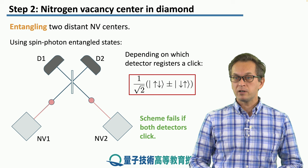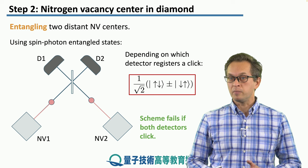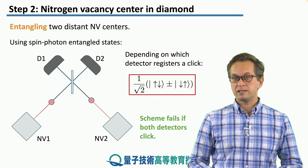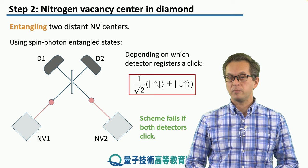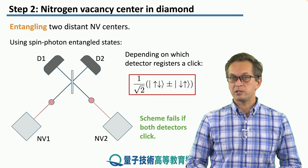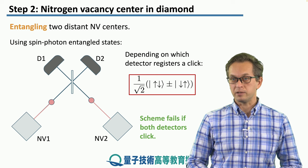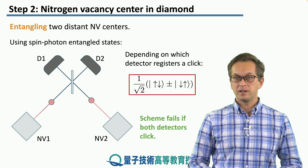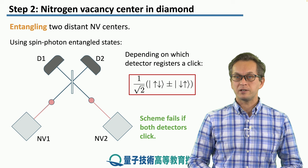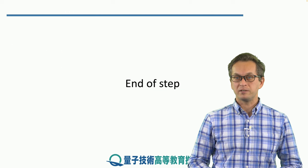However, if both detectors register a click, then this scheme fails. This again brings us back to the fundamental limitation of linear optics — we can only distinguish two of the four Bell pairs. This concludes our discussion of NV centers in diamond. See you in the next step.